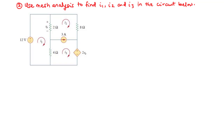As usual, the first thing we need to check is if there exists a current source only in one mesh. Looking through the circuit, the answer is no — there does not exist a current source only in one mesh. The second thing is to check if we have a current source in between two meshes, and the answer is yes: we have a current source of 3 amperes in between mesh 2 and mesh 3.